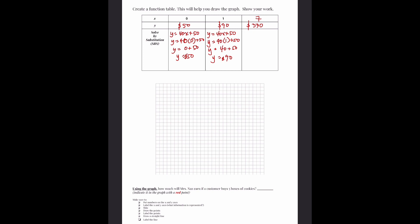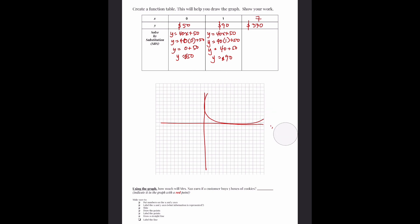Now let's plot our graph. Since we're talking about money, all your units will be positive because you want to earn money. So you do not need to do the whole graph — we only need the part where Y is positive and X is positive. When you draw your lines, please make sure they are super straight, especially when you're using a ruler.